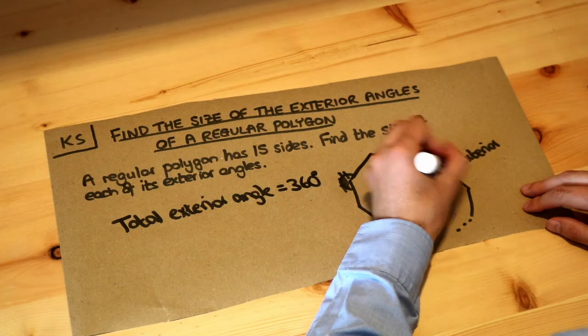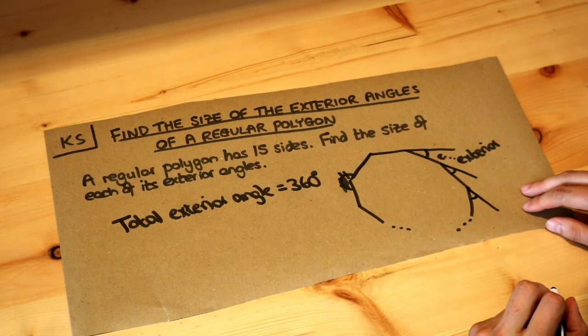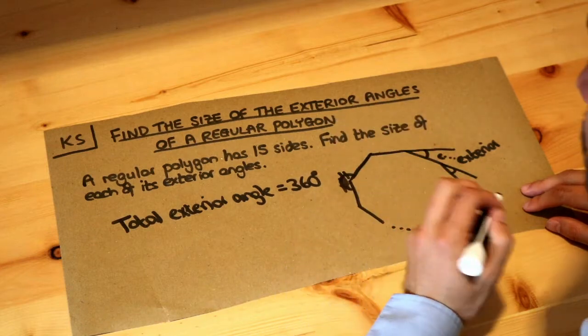Now each of these exterior angles in a regular polygon are going to be exactly the same, aren't they? Because of this kind of rotational symmetry about it.